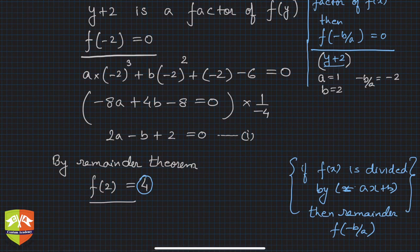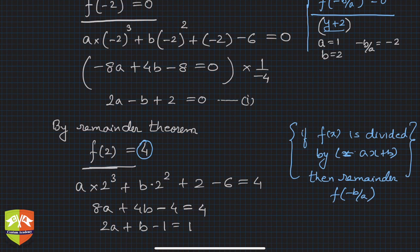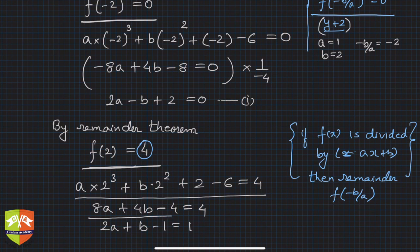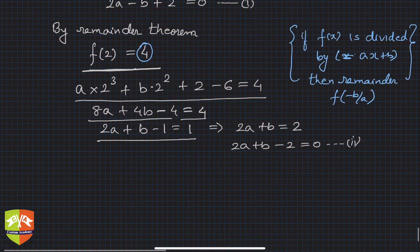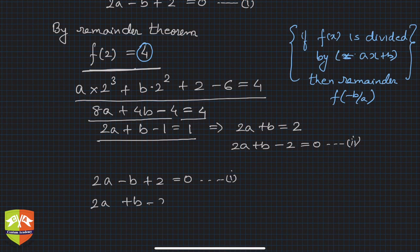Let's find f(2): a(2)³ + b(2)² + 2 − 6 = 4, giving 8a + 4b − 4 = 4, so 8a + 4b = 8. Dividing by 4: 2a + b = 2, or equivalently, 2a + b − 2 = 0. This is Equation 2.